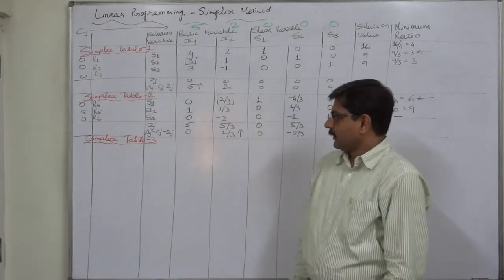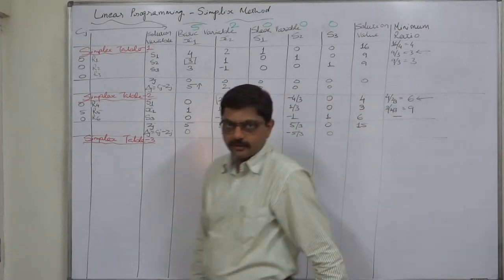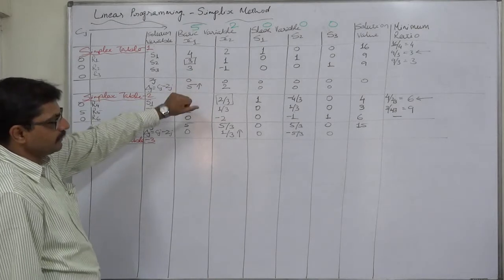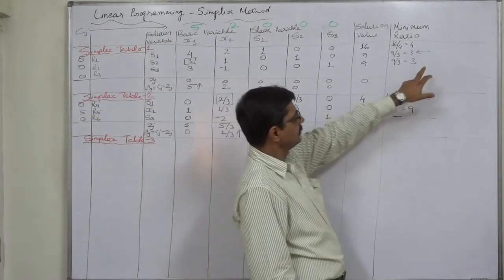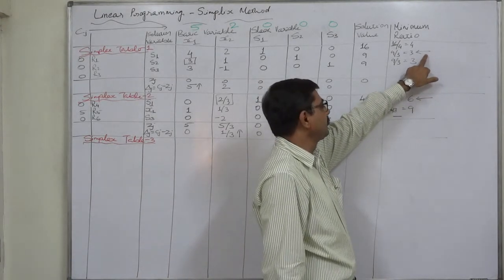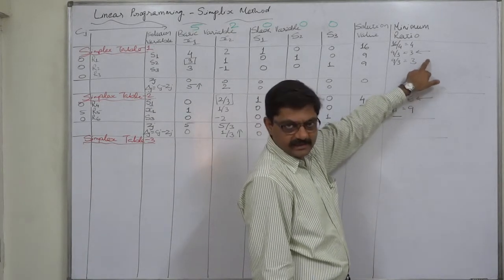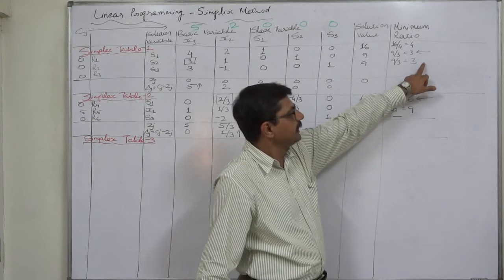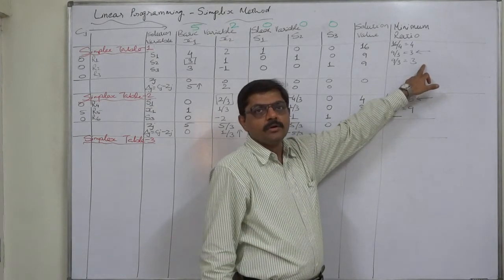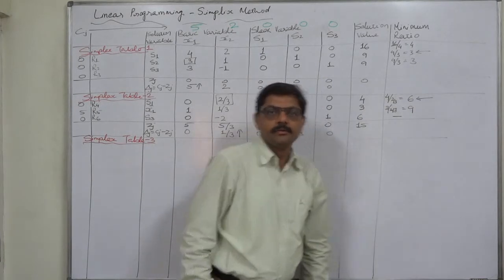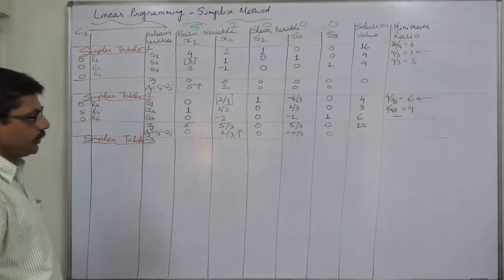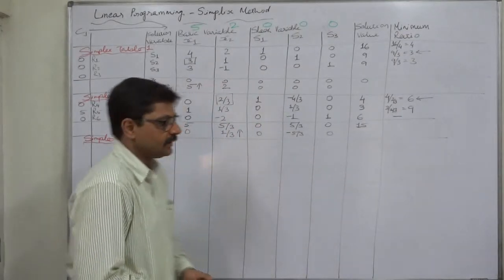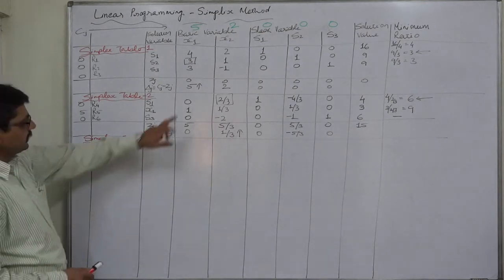Hello friends, welcome back. Now we are going to prepare Simplex Table 3 for the problem which we are following through the Simplex Method. For your ready reference, I have already written the first two tables here. Let us recap that in the first table there was a tie in the minimum ratio of row 2 and row 3. I selected row 2, and I have already suggested you to do this sum again in your notebooks by selecting row 3 — that will be very good practice.